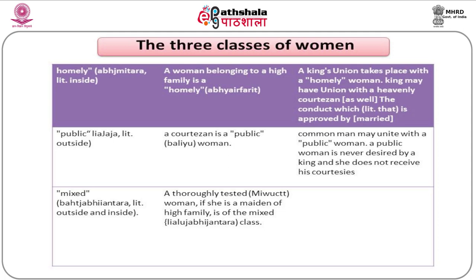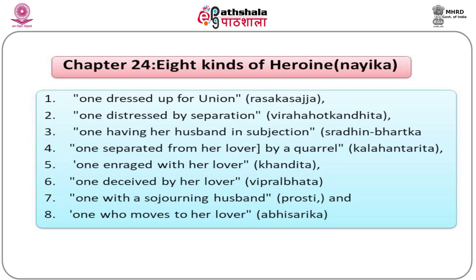Lassya is a dance form mentioned by Bharat Muni in Chapter 20 of his Natya Shastra. The woman's dance style, Lassya, is replete with Sringar, while male choreography is loaded with Tandav movements. Natya Shastra classifies eight kinds of heroines (Naika): one dressed up for union (Rasak Sajja), one distressed by separation (Virah Hoth Khandita), one having her husband in subjugation (Sradin Bhartak), one separated by quarrel (Kalah Ant Reet), one enraged with her lover (Khandita), one deceived by her lover (Vipral Bhat), one with a sojourning husband (Prosti), and one who moves to her lover (Abhisarika).